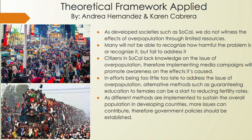Due to efforts being too little and too late, alternative methods should be established. For example, the government can guarantee education for girls, since increased fertility rates are due to lower levels of female education. As different methods are implemented, more consequences tend to contribute to the issue. Therefore, government policies should be established to ensure current and future human needs are met — examples include addressing poverty and access to reproductive health.